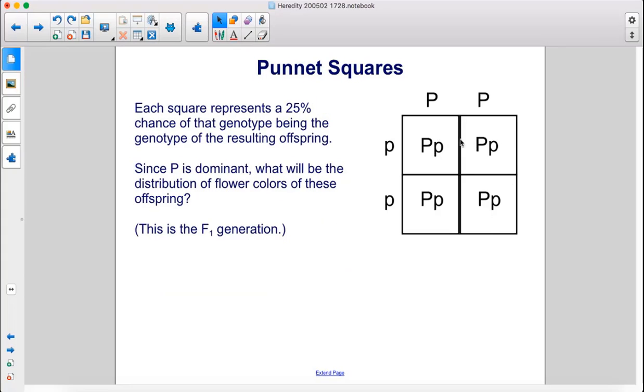Each square represents a 25% chance of that genotype being the genotype of the resulting offspring. Since capital P is dominant, what will be the distribution of flower colors of these offspring? This is the F1 generation.